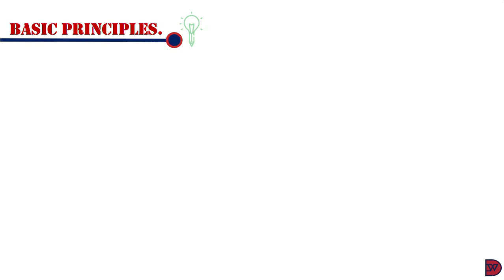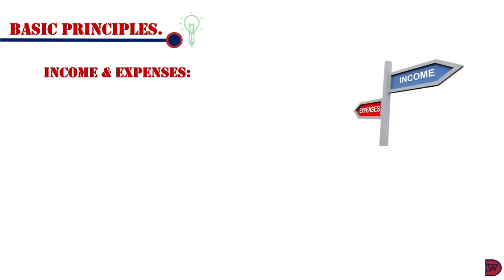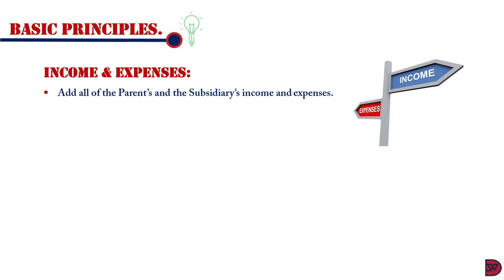Let's move on to look at certain basic principles. The first is income and expenses: we add all of the parent income and expenses to that of the subsidiary. Once the profit after tax is calculated, we deduct a portion attributed to the non-controlling interest where it exists.